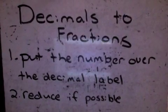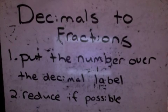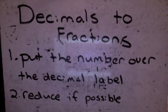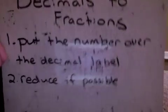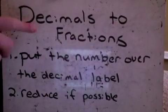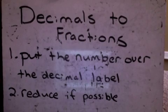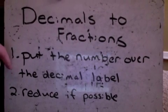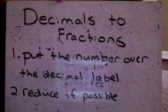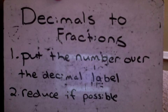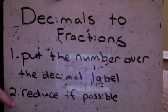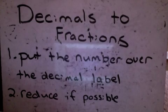We've already talked about changing fractions into decimals — that's what we did last session. Now we're going to go from decimals to fractions, and there are two things to write down. Number one: put the number over its decimal label, meaning the decimal label goes on the bottom and the number on top. Number two: reduce it down if possible.